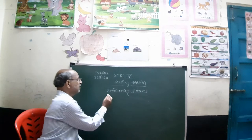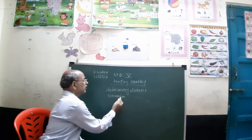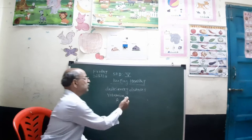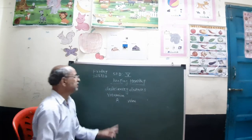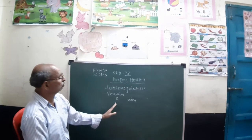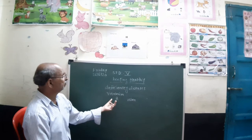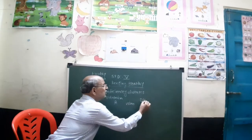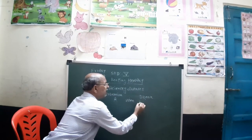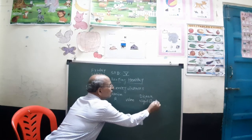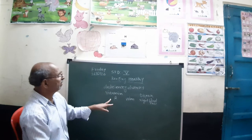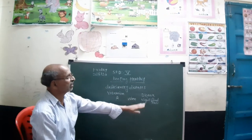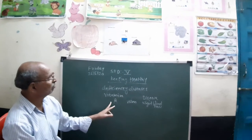The first vitamin is Vitamin A, which helps us to improve our vision — we can see with our eyes. To keep our vision good, Vitamin A is required. But if a person is not getting Vitamin A, they will suffer from the disease called night blindness. Night blindness means the person cannot see properly at night due to the lack of Vitamin A.